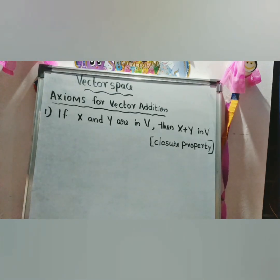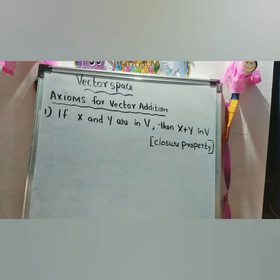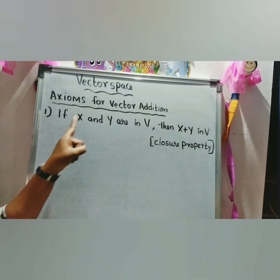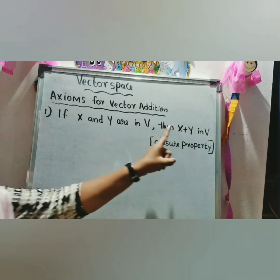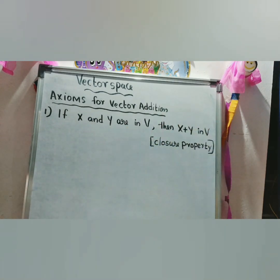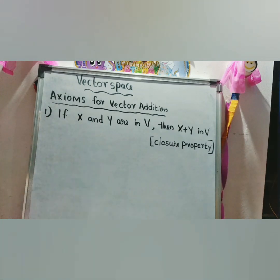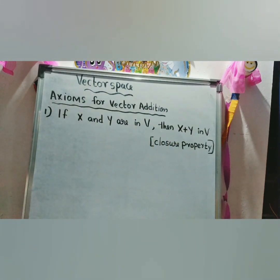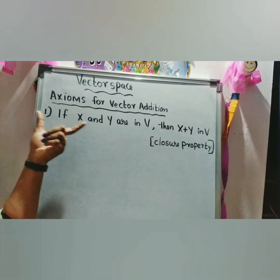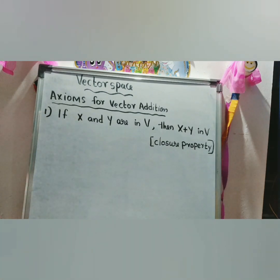First property — axiom for vector addition: if x and y are in V, then x plus y is in V. If two elements are in V, then their sum is also in V. This property is known as the closure property for vector addition.